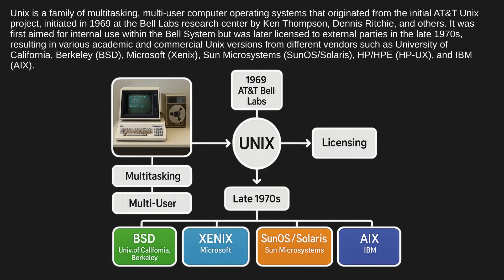It was first aimed for internal use within the Bell system, but was later licensed to external parties in the late 1970s, resulting in various academic and commercial Unix versions from different vendors such as University of California Berkeley (BSD), Microsoft (Xenix), Sun Microsystems (SunOS, Solaris), HP/HPE (HP-UX), and IBM (AIX).